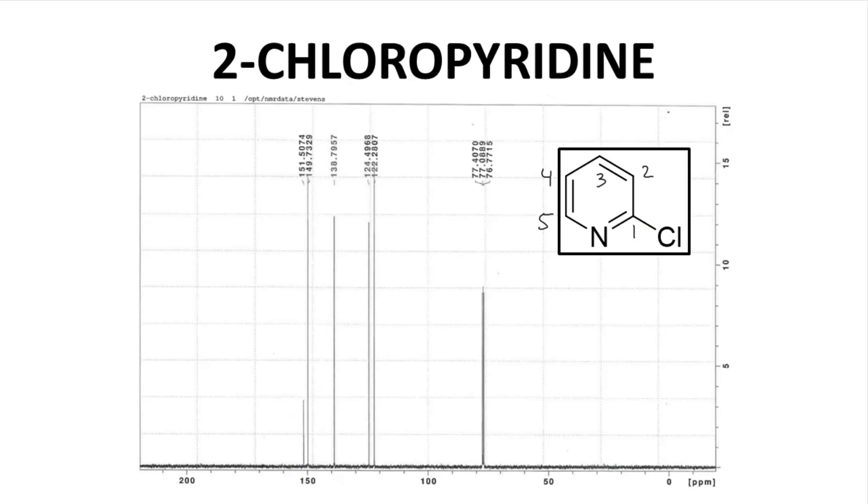Note that 2-chloropyridine has no alkyl carbons – carbons that are sp3 hybridized. So there are no upfield signals, just downfield signals.